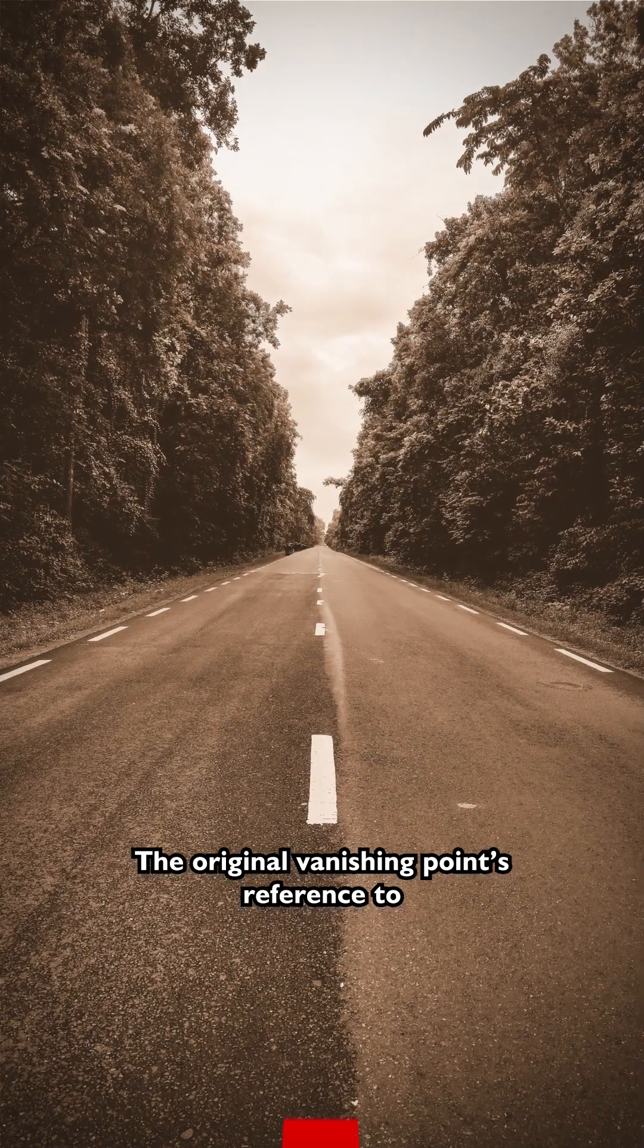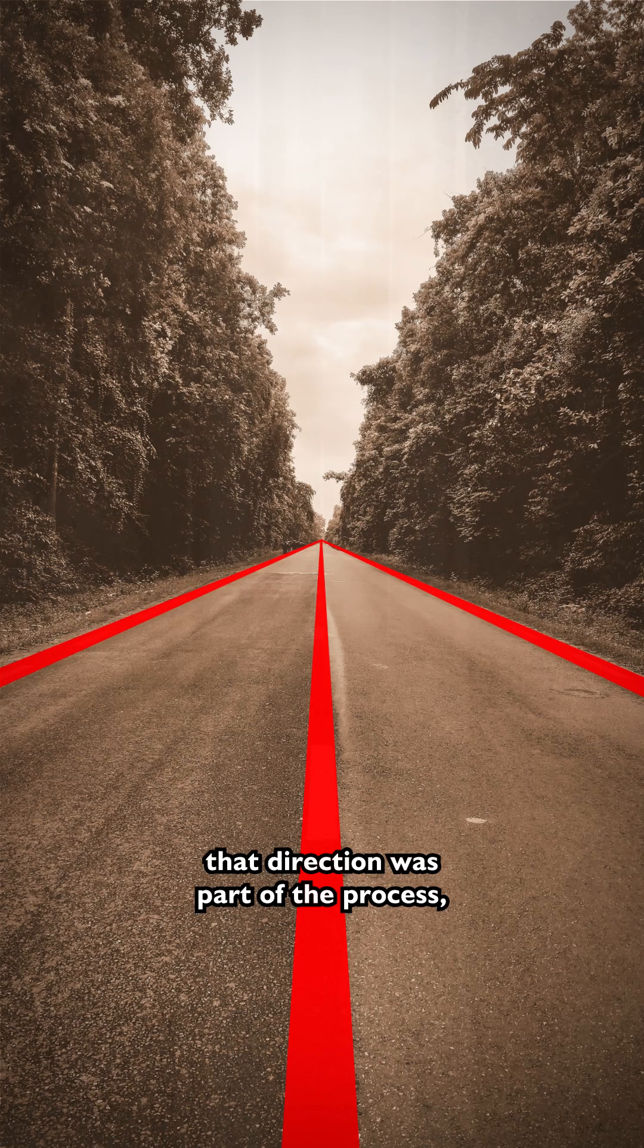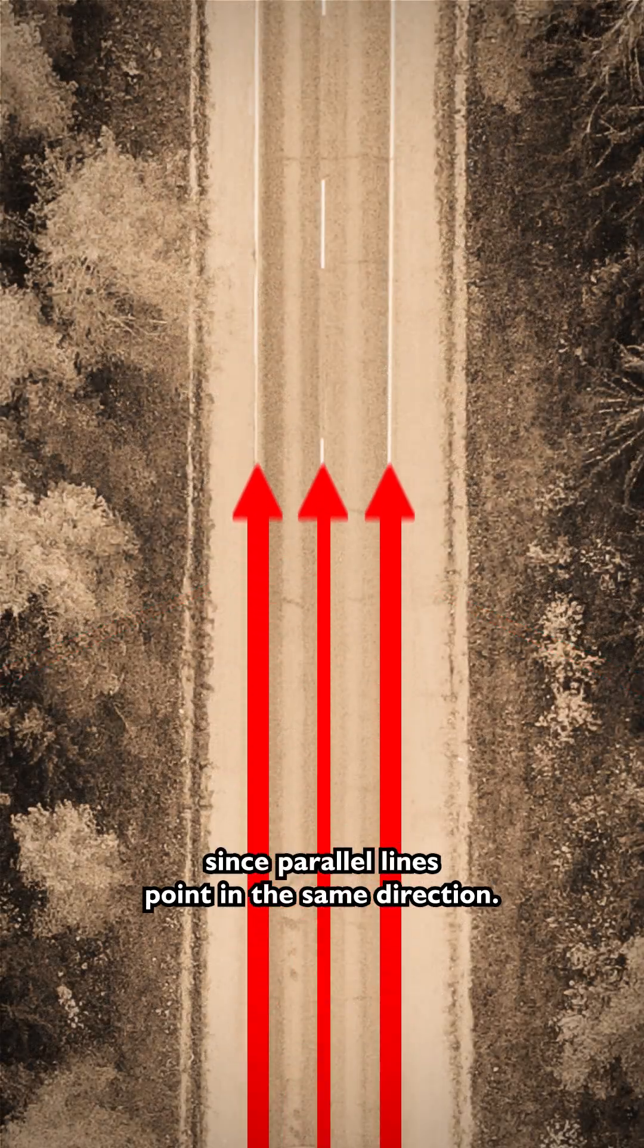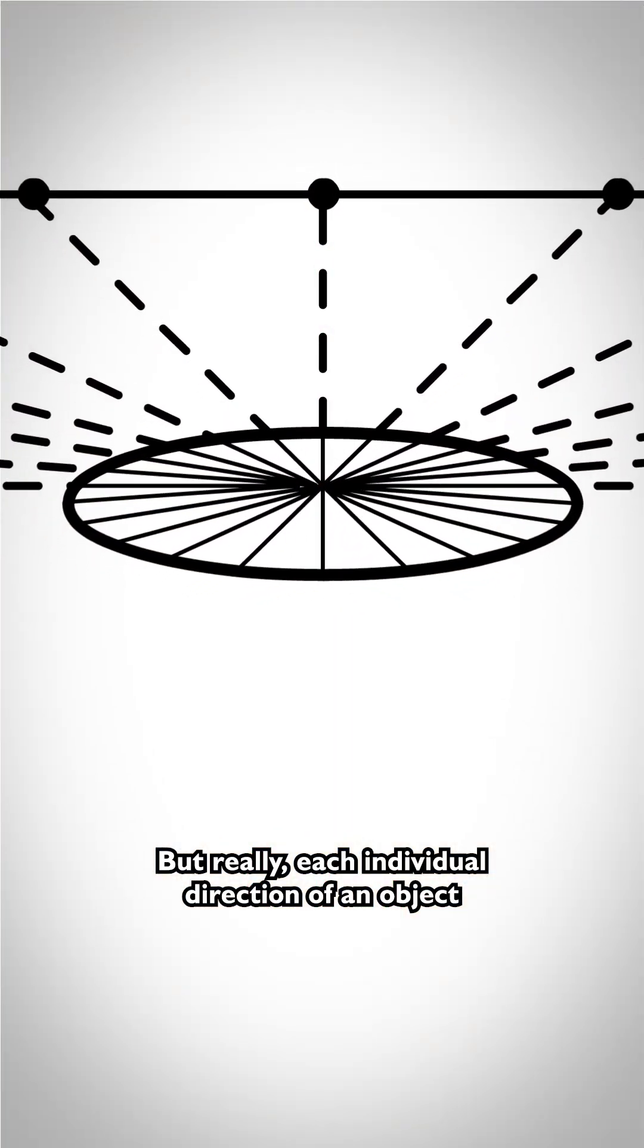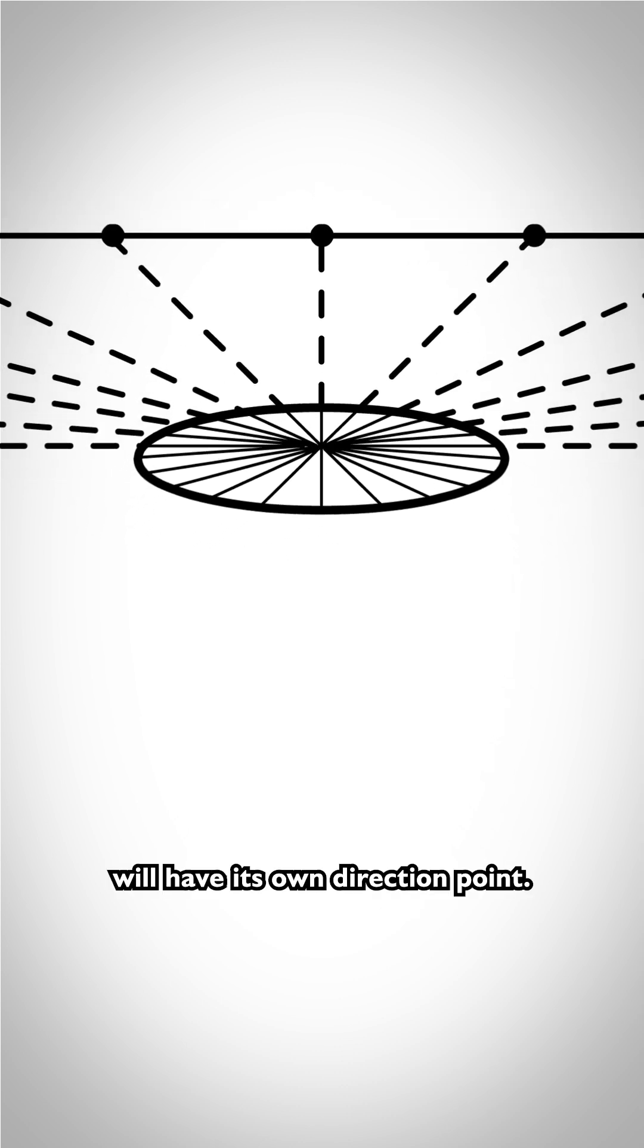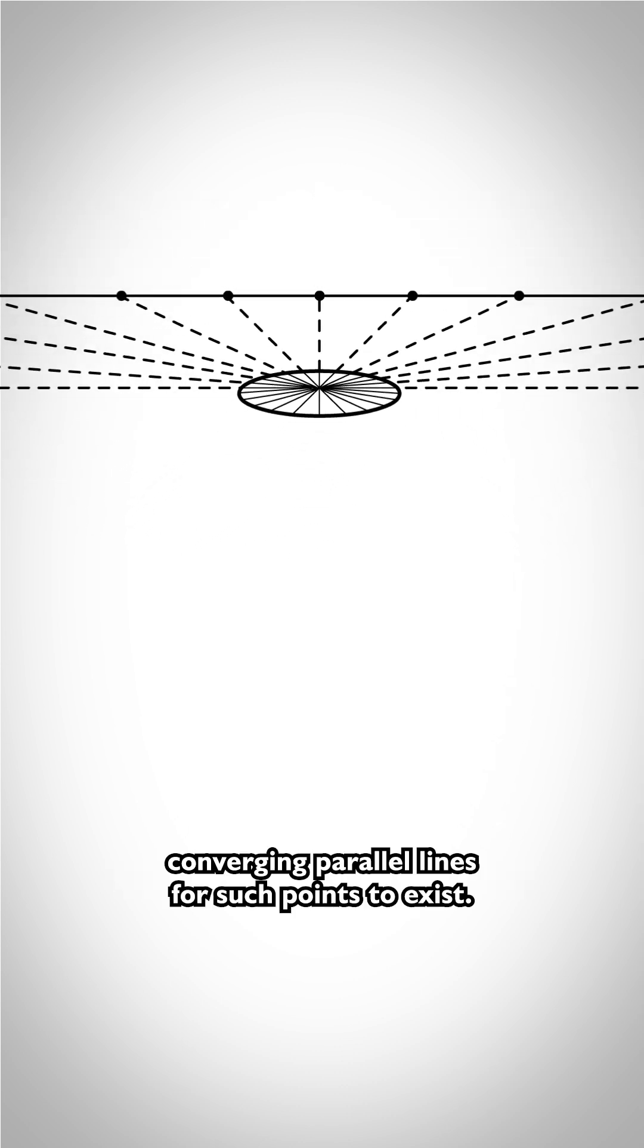The original vanishing points referenced of converging parallel lines was the only hint that direction was part of the process, since parallel lines point in the same direction. That's what parallel means. But really, each individual direction of an object will have its own direction point, and so we do not need two or more converging parallel lines for such points to exist.